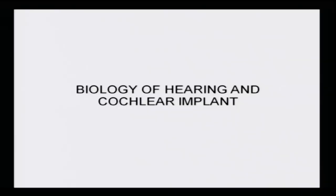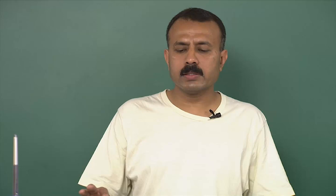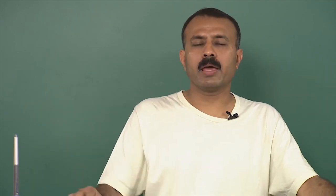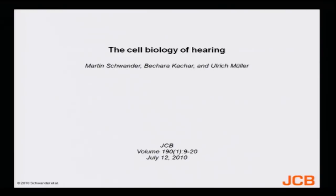The title of this class is 'Biology of Hearing and the Cochlear Implant' — this is Part One. We will then move on to vision and then to the brain. The reference I wish all of you to consult is 'The Cell Biology of Hearing' by Martin Schwindler, Kasher, and Muller, published in the Journal of Cell Biology, volume 190, issue 1, pages 9–20, in the year 2010. Please go through it to understand some of the structures I have already discussed.